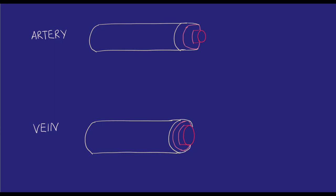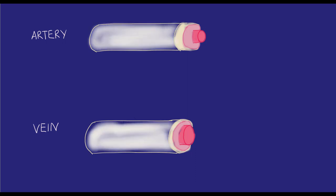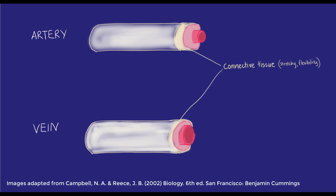Arteries and veins are made of the same tissue types but are put together in different ways that suit their function. They have three layers. The outermost layer is made of stretchy connective tissue that allows the vessel to be flexible. The middle layer is made of smooth muscle which gives the vessel strength and shape. The inner layer is a one-cell thick lining called endothelium.